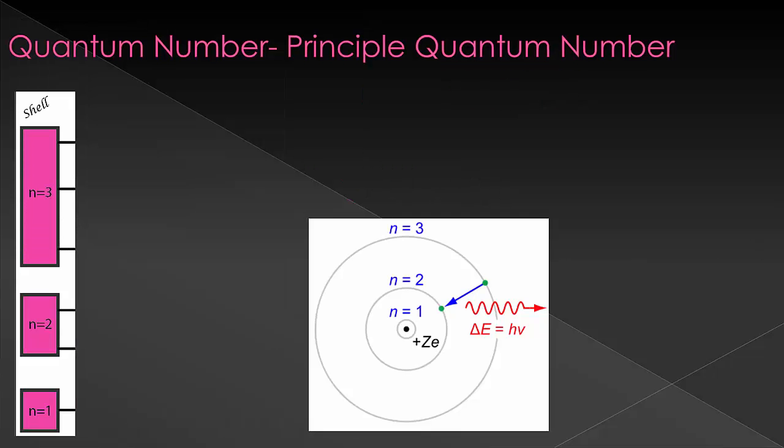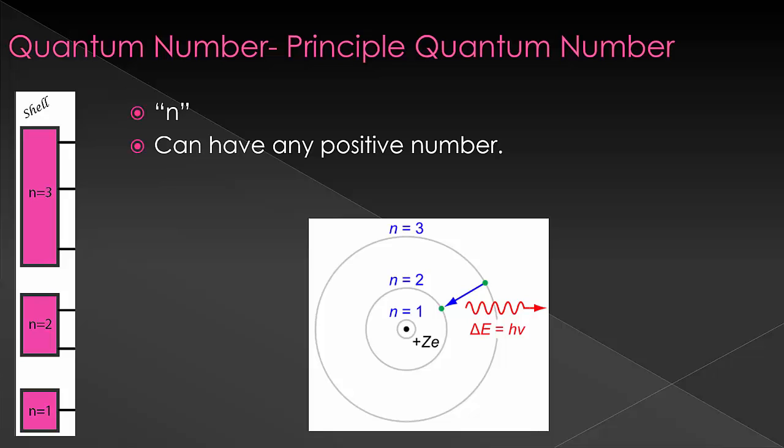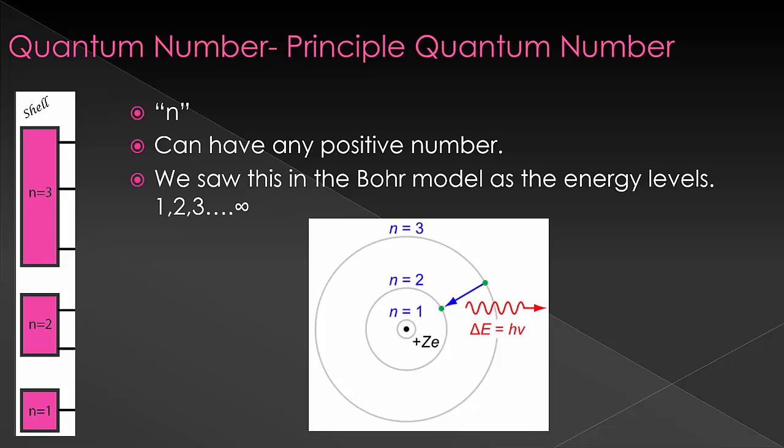Let's start with the principal quantum number. This is N, and it can be any positive number. We saw this in the Bohr model as energy levels: one, two, three, all the way up to infinity. This does still occur in the more correct quantum mechanics version of the atom as well. In the chart, I'm only showing up to three, but of course this continues all the way up.